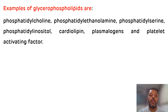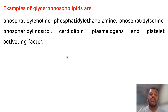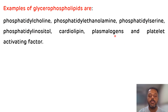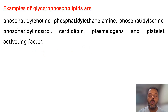You can remember the names of these glycerophospholipids by using the mnemonic P6C. P6C stands for: phosphatidylcholine, phosphatidylethanolamine, phosphatidylserine, phosphatidylinositol, plasmalogens, platelet-activating factor, and C stands for cardiolipid. Now we will discuss all these glycerophospholipids one by one.